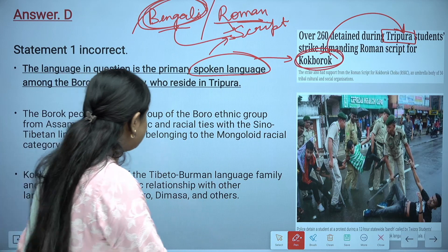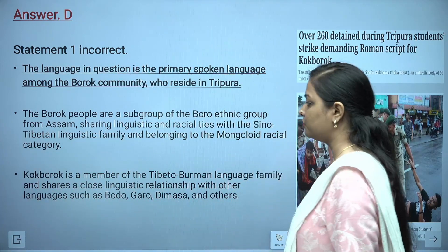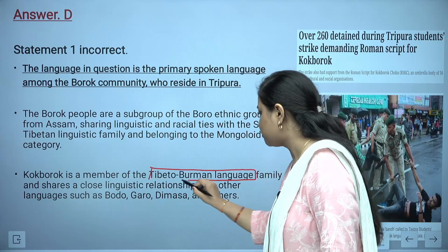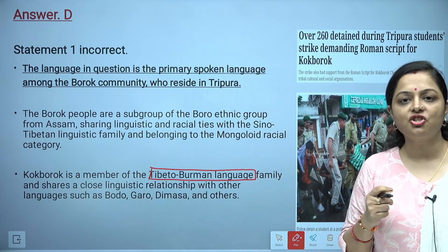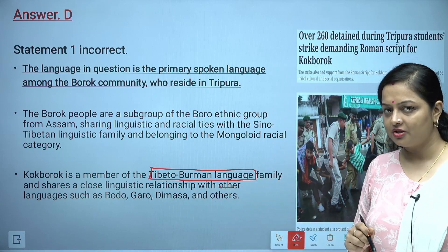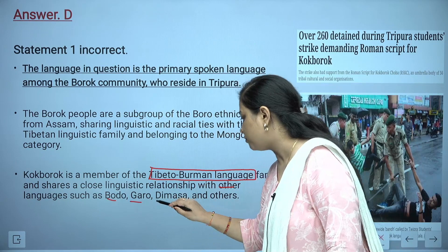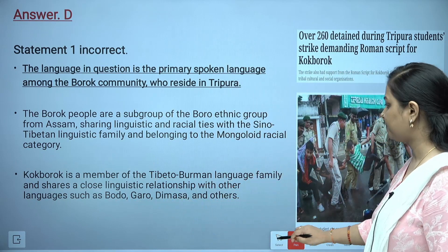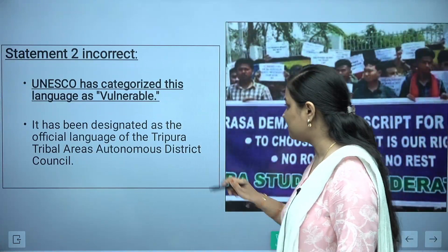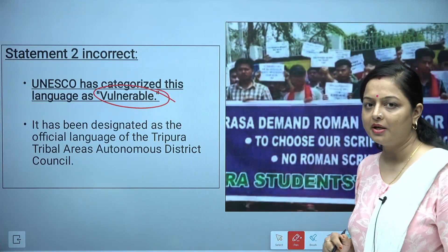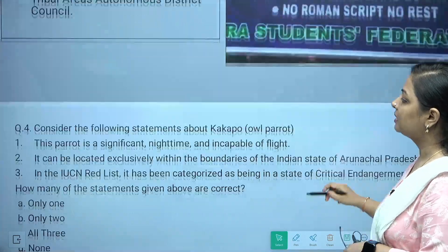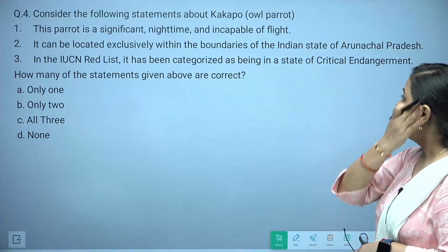Many people favor the Bengali script while others support the Roman script — this controversy is why Kokburok is in the news. Kokburok is a member of the Tibeto-Burman language family and shares close linguistic relationships with languages like Bodo, Garo, and Dimasa. It is not 'at risk' but is classified as 'vulnerable' under the UNESCO language list.